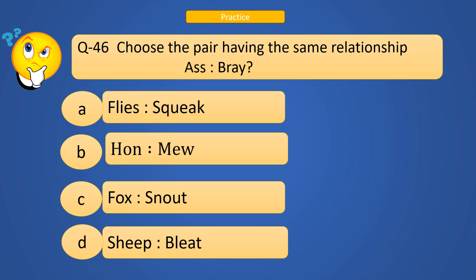The question is choose the pair having the same relationship as Ass : Bray. Which one is the correct option? Flies : Squeak, Hon : Mew, Fox : Snout, Sheep : Bleat.